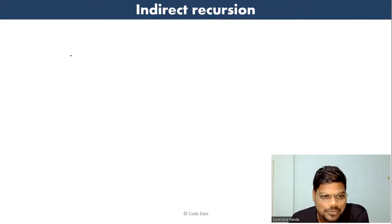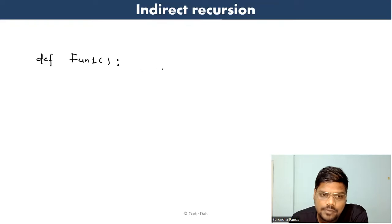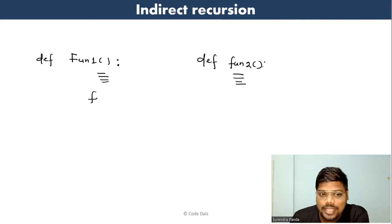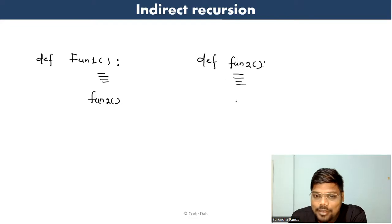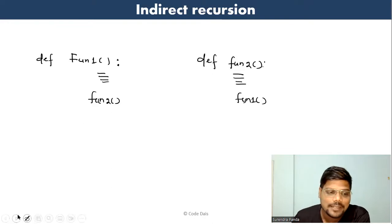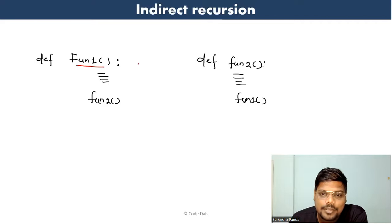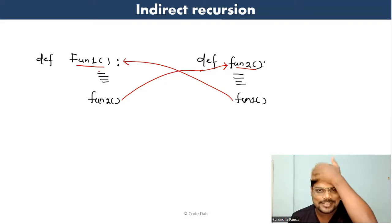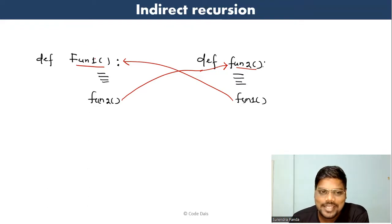So in indirect recursion: we have two functions font1 and font2. Inside font1 we call font2, and inside font2 we call font1. They call each other — that's why they are called indirectly recursive. I will discuss the internal architecture, diagrammatical representations, and dry run — watch till the end and you will get full clarity.